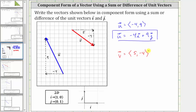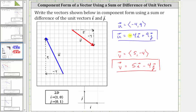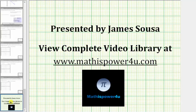But again, we're told to express this using a sum or difference of the unit vectors i and j. The x component can be expressed as five times the unit vector i, and the vertical component can be expressed as negative four times the unit vector j. And therefore, we can express vector v as five times the unit vector i minus four times the unit vector j. In the next video, we'll look at a formula we can use to determine the x and y components of a vector using the ordered pairs for the initial and terminal points. I hope you found this helpful. Thank you.